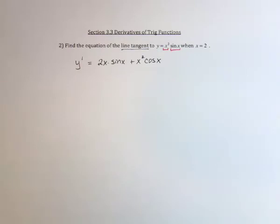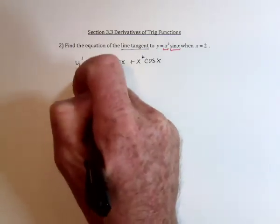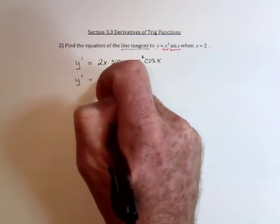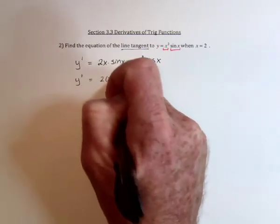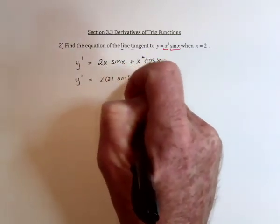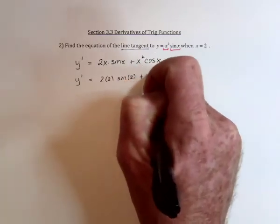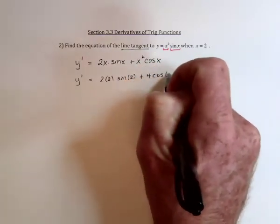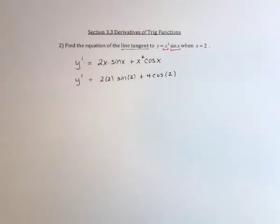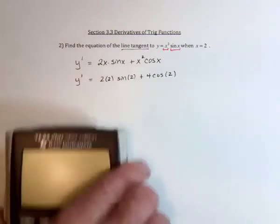And now to find the actual slope, we're going to need to substitute in the number 2. The calculator might be handy for that.